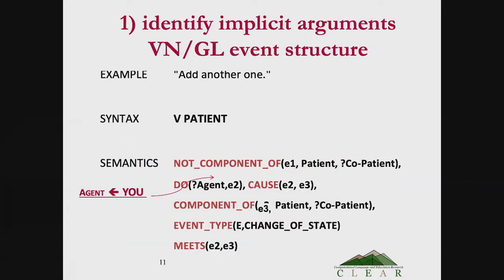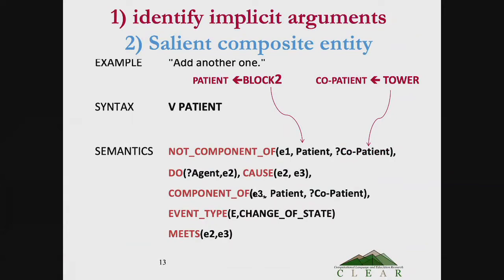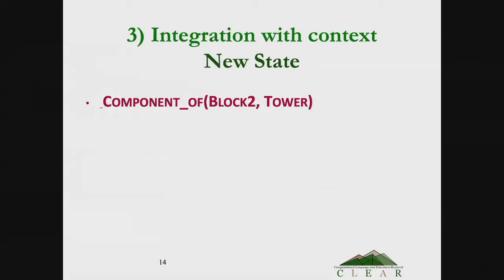Here's where our agent — the implicit 'you' — we want to fill in as the agent. And from James Allen and his TRIPS system: if we have a discourse history, and what we said before is 'let's build a tower, put a block on the table,' then we had a previous block mentioned — block one — and a tower in the discourse context. If we said 'add another one,' we could use 'one' to refer back to block one, telling us we want another thing of type block, which would be block two. And then we'd resolve the co-patient as the tower. So now we know that our new state at the end should be with block two being a component of the tower.